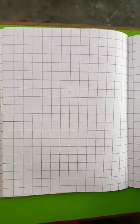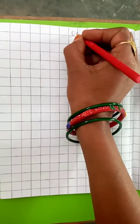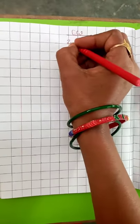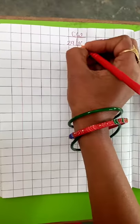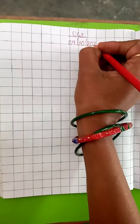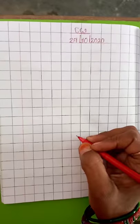So, let's start right here. C, W, O, 29/10/2020. Okay, write heading.